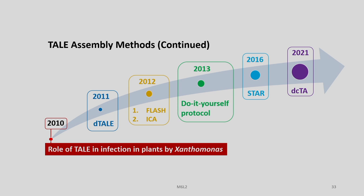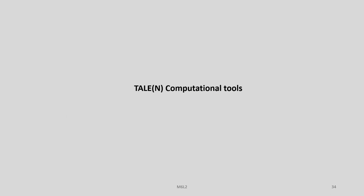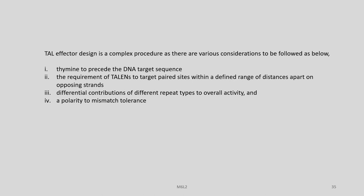In the last part we discussed about some of the assembly methods used for TALEN-based fusion protein engineering, like FLASH, ICA, the DIY protocol, and STAR. Today we will discuss about some of the computational tools used in this entire process as well as other requirements for TALEN researchers. TALEN effective design is a complex procedure as there are various considerations to be followed, some of which are already known to you from earlier discussions.